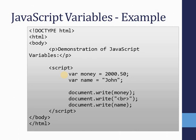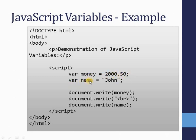In this code I declare some variables, assign some values, and print them out. In the body part I have a paragraph tag saying 'demonstration of JavaScript variable.' Whenever I want to write JavaScript I must use the script tag. Within the script tag I have declared two variables — `money` and `name` — and assigned values to them. `money` is initialized with 2000.50 and `name` is initialized as 'John'.